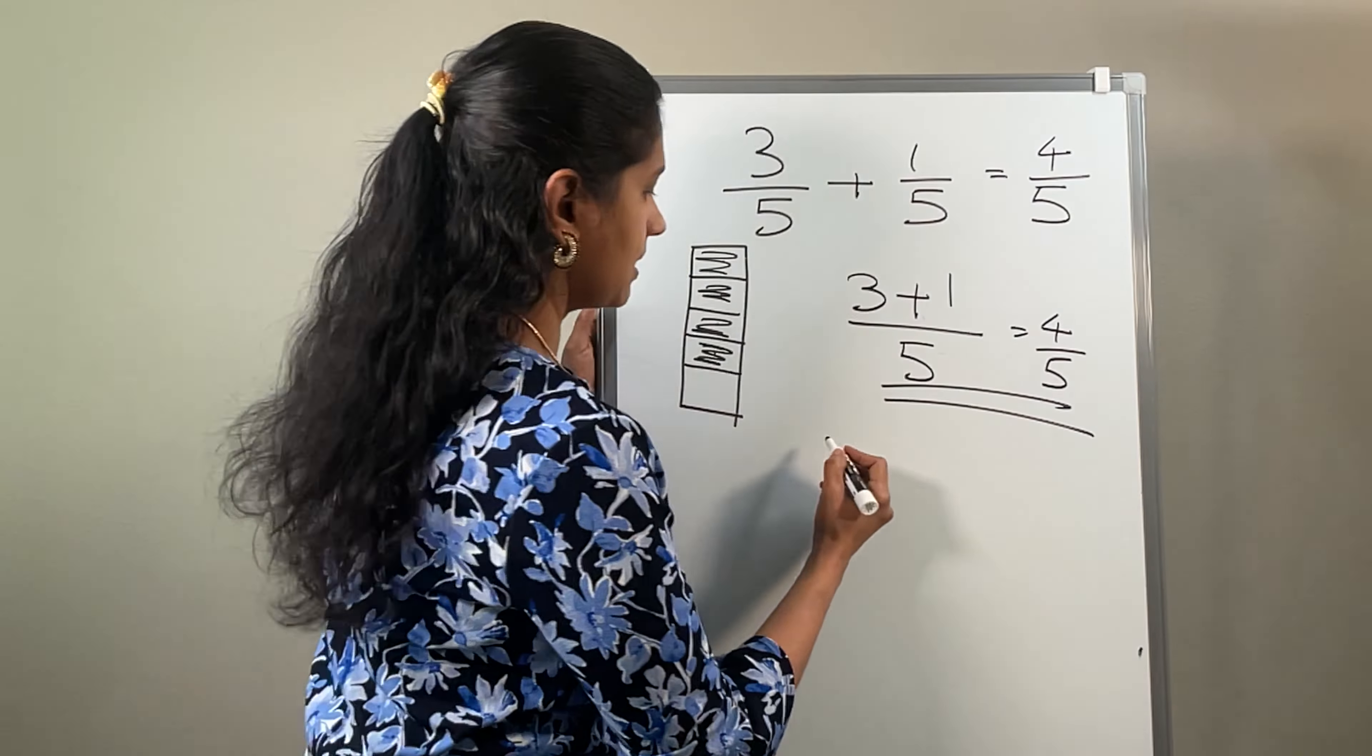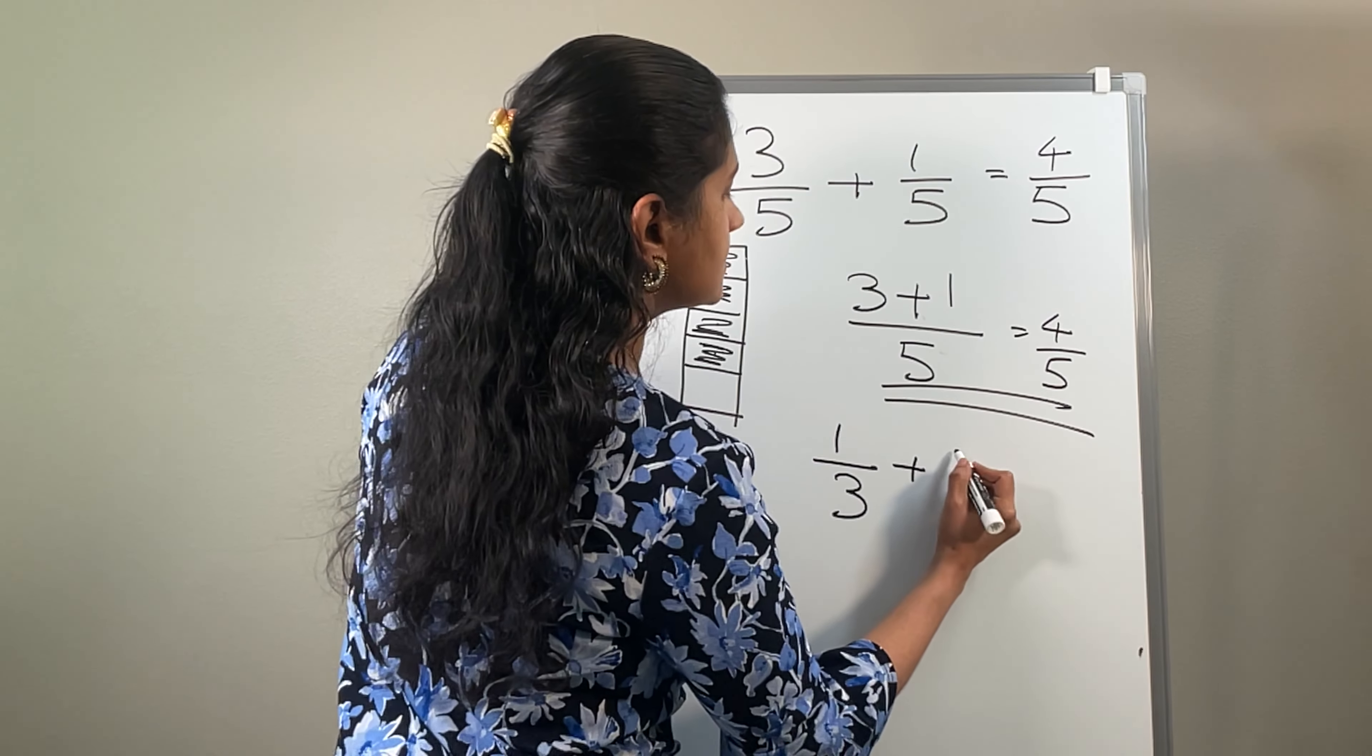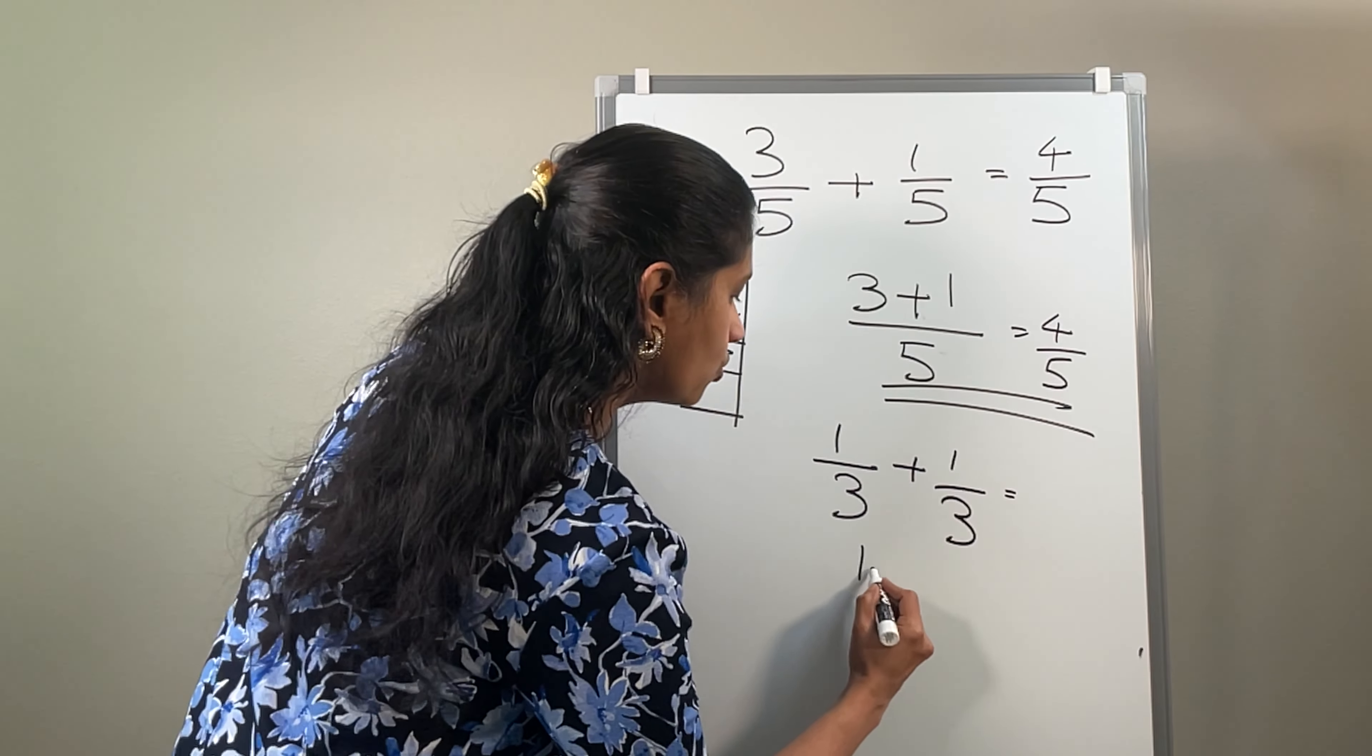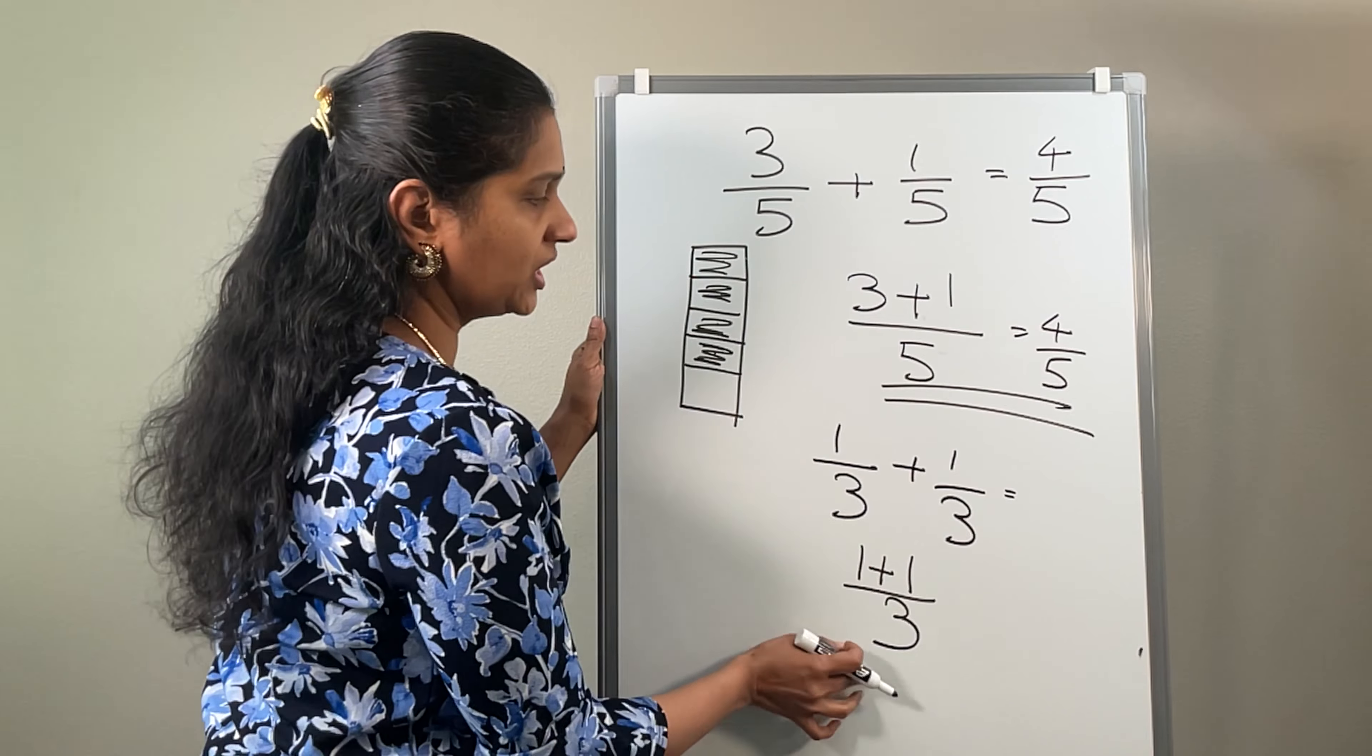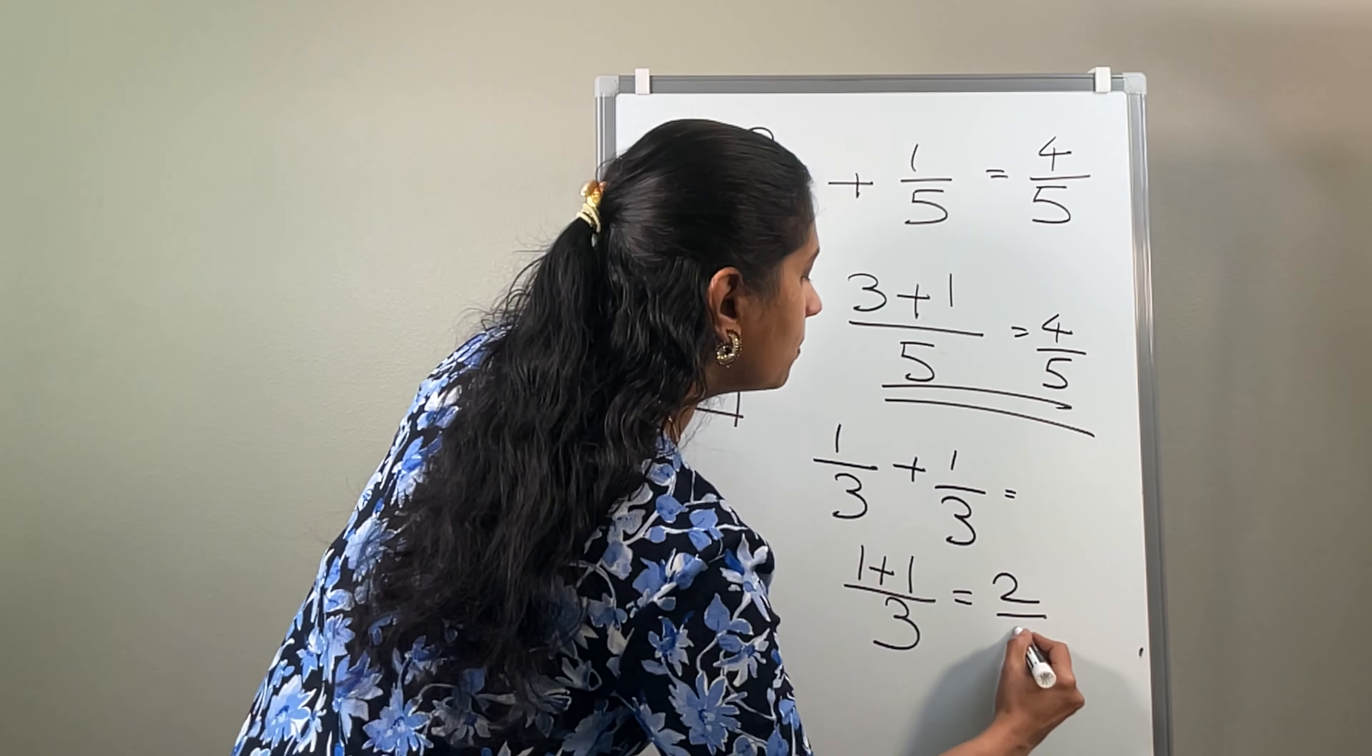Now, consider another example. Suppose you are given something like 1 by 3 plus 1 by 3. This can be written as 1 plus 1 by the denominators. If it is the same number, you can simply put it. Just add the numerator which is equal to 2 by 3.